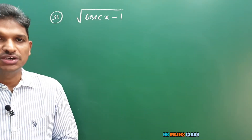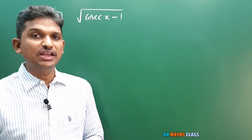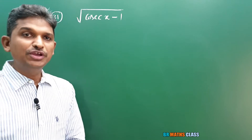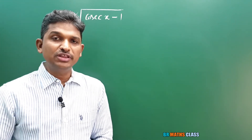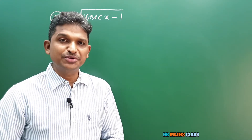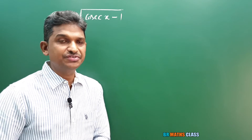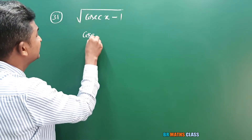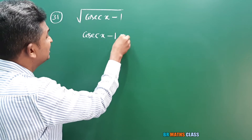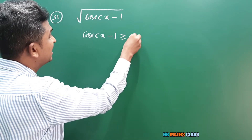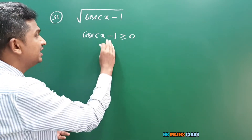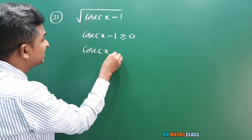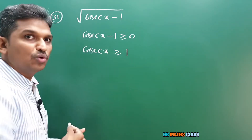Question 31: we need to calculate the domain of √(cosec x − 1). Whatever expression is inside the square root must be greater than or equal to 0. So cosec x − 1 ≥ 0. Taking 1 to the other side, cosec x ≥ 1. Now we need to find for what x values this inequality holds.